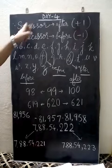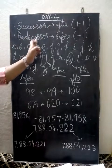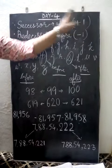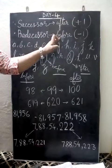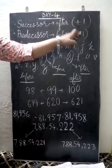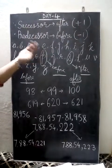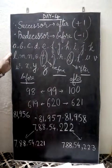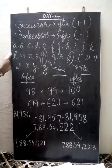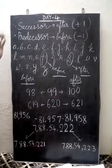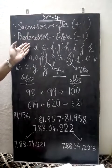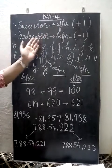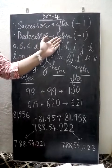Successor means after and predecessor means before. Successor we find with plus 1, predecessor we find with minus 1. In your Grade 1 or 2, you would have studied what comes after and what comes before. That same thing we learn here as successor and predecessor. A number which comes after is successor; a number which comes before is called predecessor.